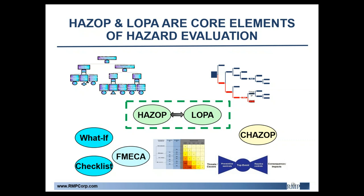HAZOPs and LOPAs must address and integrate evolving regulatory requirements, especially in California, where we're mandating more and more things such as application of SPA, damage mechanism reviews, hierarchy of hazard control analysis, and so on for all California refineries. To achieve all of this in one efficient study, it really does require a lot of planning and preparation. Even before the planning, a clearly defined objective and approach will help streamline things as well.